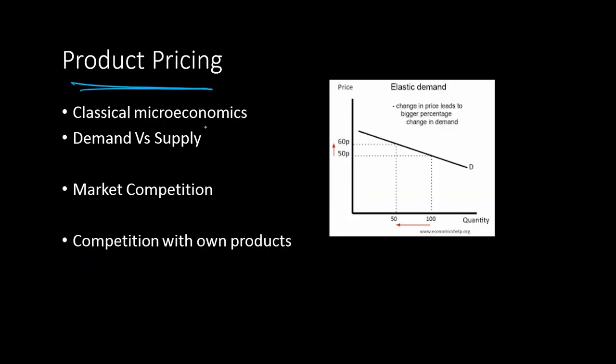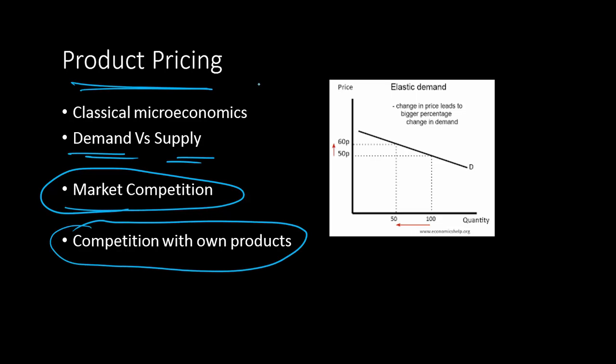It can also be used in product pricing. Using the demand and supply curve, we need to decide what should be the ideal price. We need to see how price is changing with demand and how demand is changing with price. At different points in time you have different prices of the same product and you can see at what price you actually optimize your revenue. Using data you can analyze the market competition.